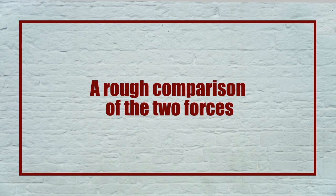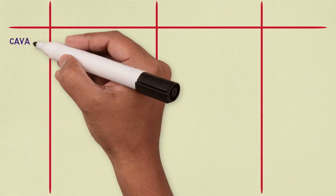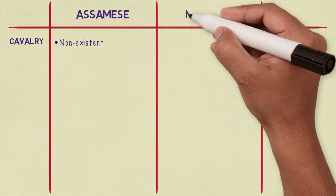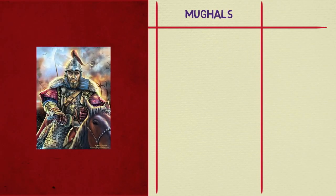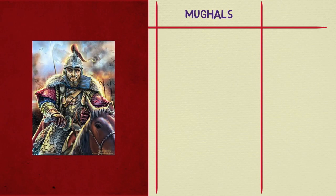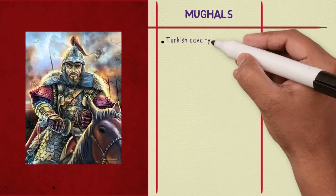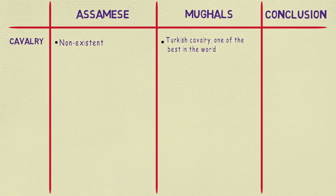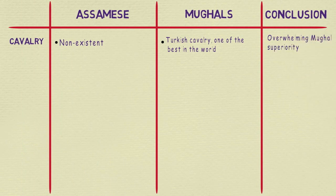A rough comparison of the two forces. Starting with cavalry: Lachit's forces didn't really have a cavalry force, probably because horses are not endemic to Assam. The Mughals, on the other hand, were the direct descendants of Timur the Lame, who was famous for using his Turco-Mongol cavalry to wreak havoc across Asia, Northern Africa, and Eastern Europe in the 14th century. Cavalry was especially advantageous for the Mughals as the average Assamese soldier was not familiar with horsemen and didn't know how to counter them.